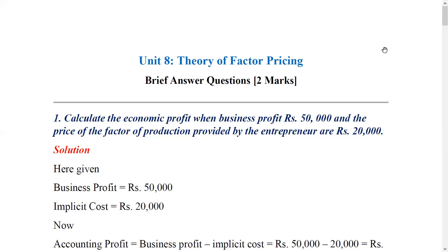If you use an entrepreneur or a business firm and use a factor, you can also make an implicit cost. So, if you use it as accounting profit minus implicit cost, it is economic profit. You can also distinguish accounting cost and economic cost. Economic cost includes both opportunity cost and explicit cost, so implicit cost is required.